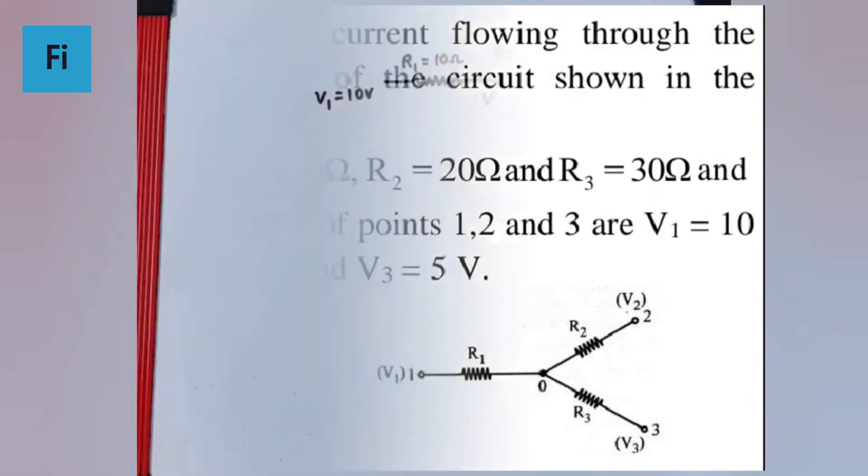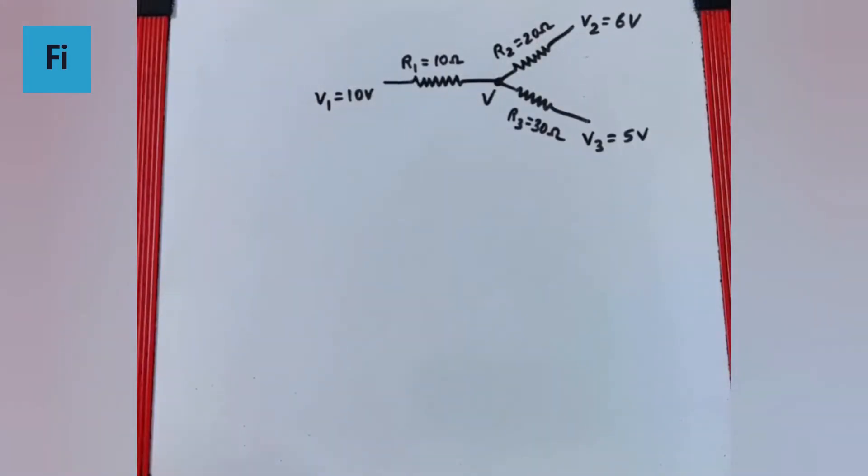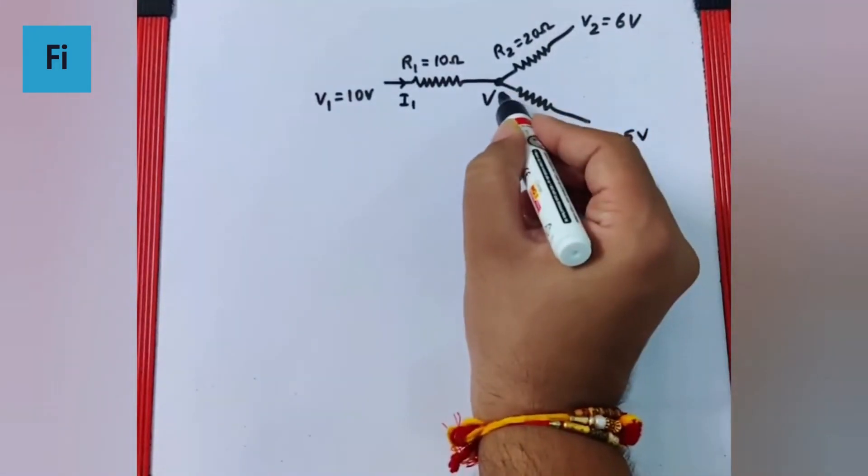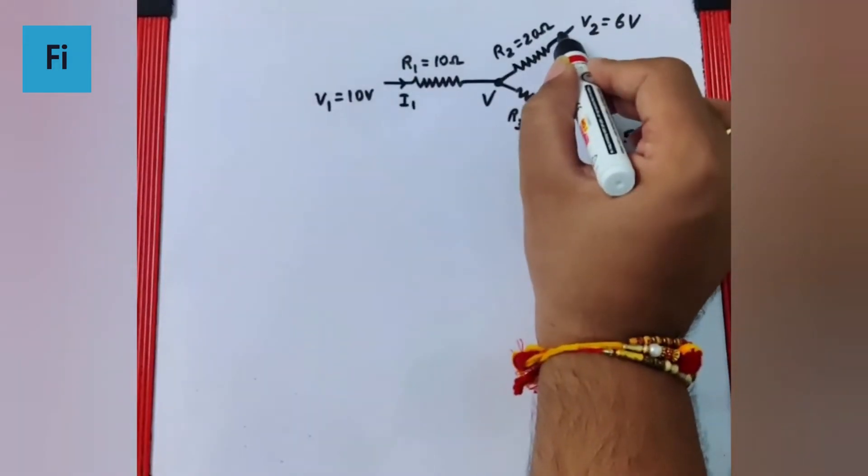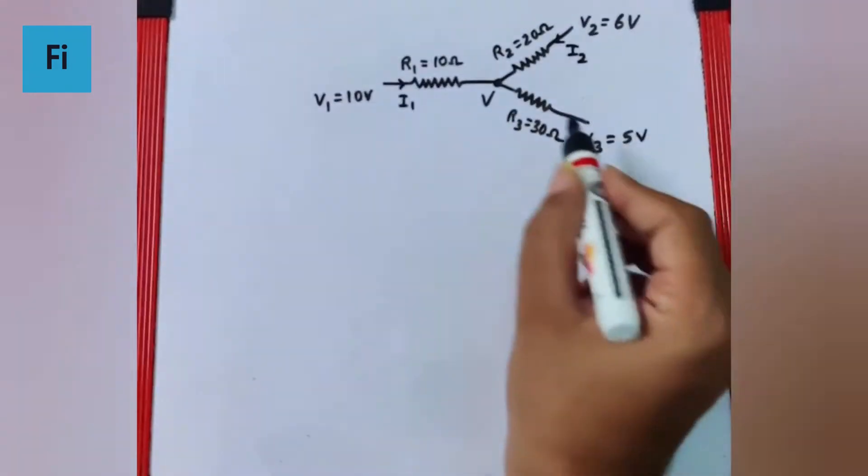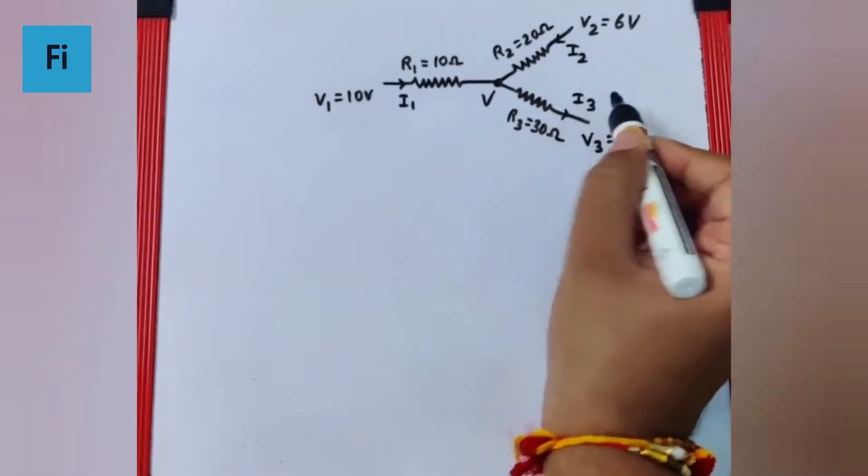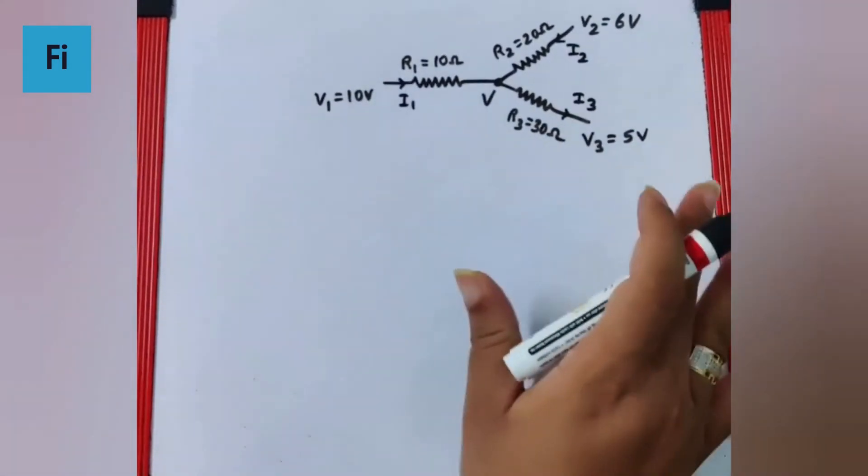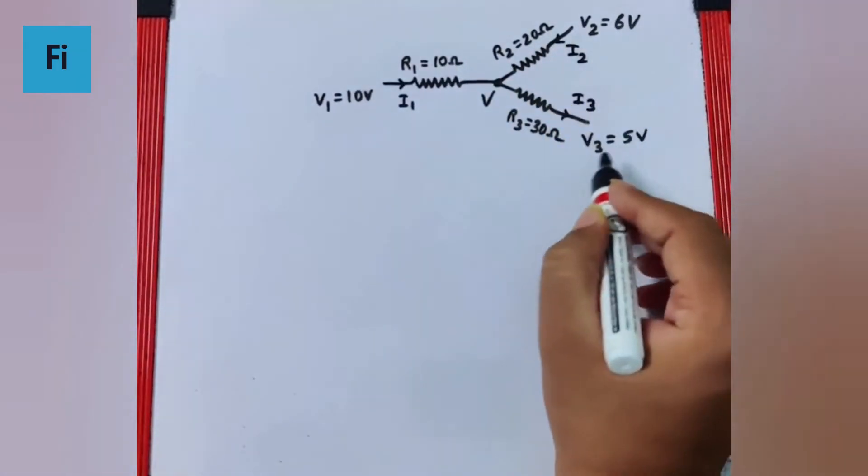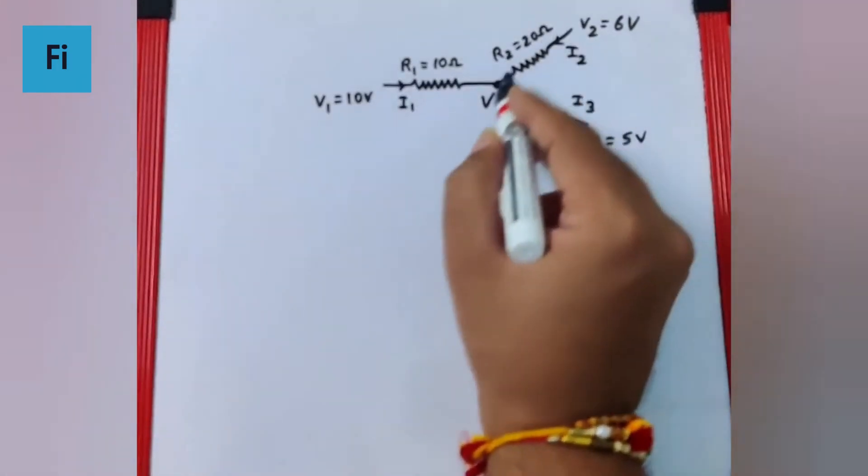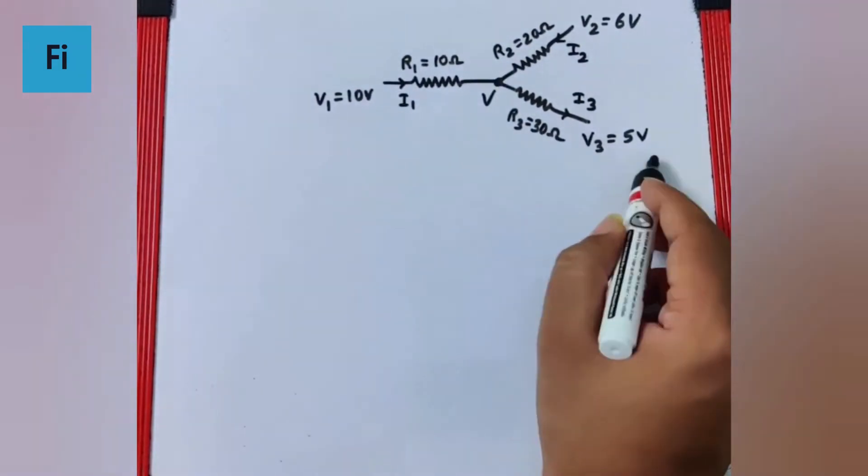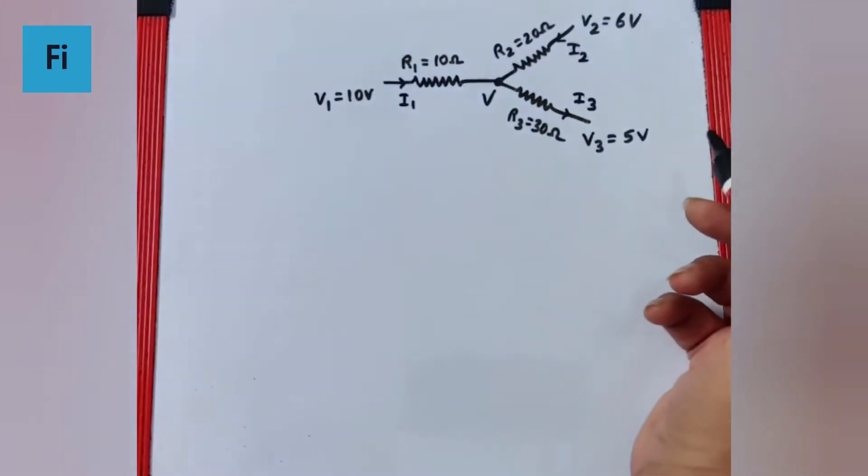First, I'm going to assume some direction of current. I'll say I1 flows from point 1 to the center point, I2 flows from V2 to V, and I3 goes from V to V3. The reason for my assumption is that V1 and V2 have greater potential than V3, so I'm assuming current from both of them will go to the connection point and then to V3. This is just an assumption.